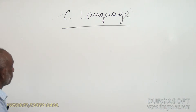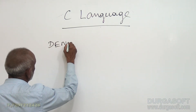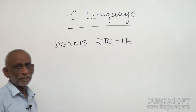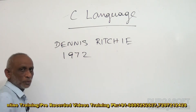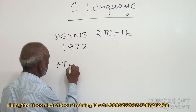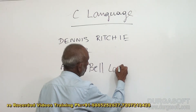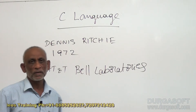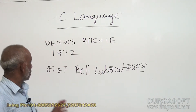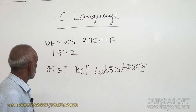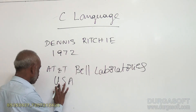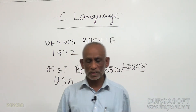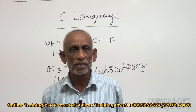C language was developed by Dennis Ritchie in 1972 at AT&T. It is in USA. C is a computer language. What is it used for? C language is used to write computer programs.